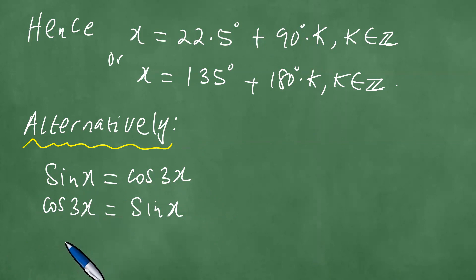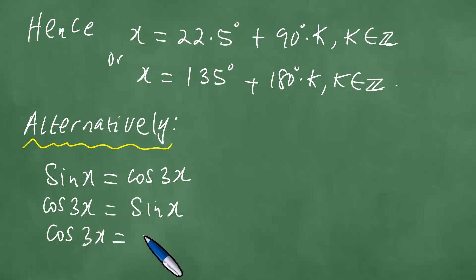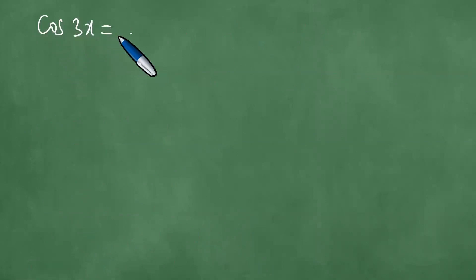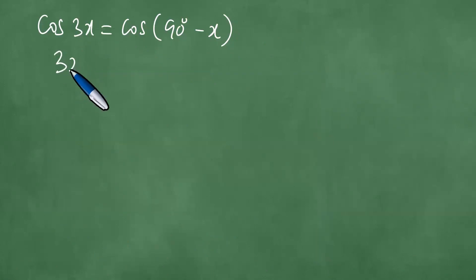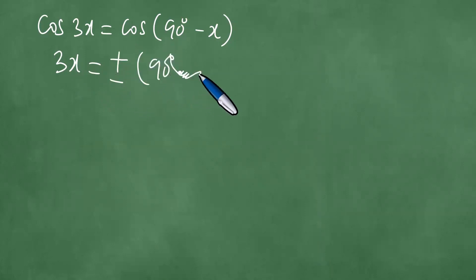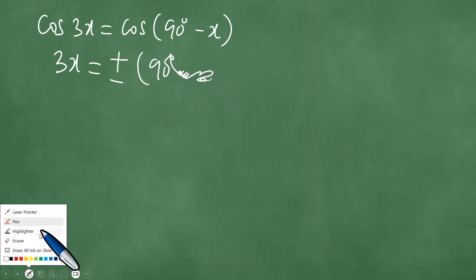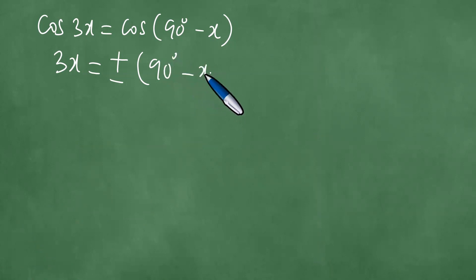This is true by symmetry. So this means cosine 3x equals cosine of 90 degrees minus x. If this is true — that cosine 3x equals cosine of (90 degrees minus x) — then because the cosine function is an even function, 3x becomes plus or minus (90 degrees minus x).